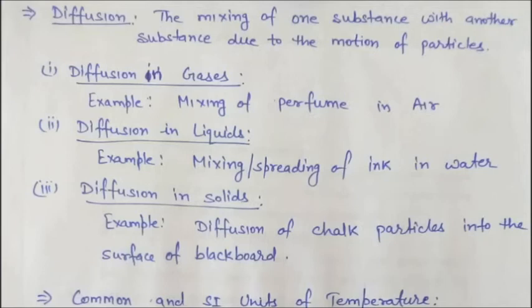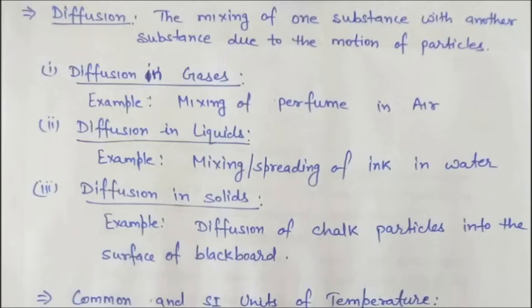Diffusion in liquids: an example is the mixing of ink in water. If a drop of ink is put into a glass of water, the ink spreads throughout the water — this is called diffusion of ink particles into water. In the previous video, we discussed potassium permanganate: when two or three crystals of potassium permanganate are dissolved in a beaker, a purple color appears throughout — that is also an example of diffusion of potassium permanganate particles into water.